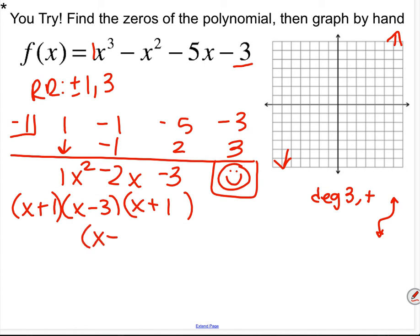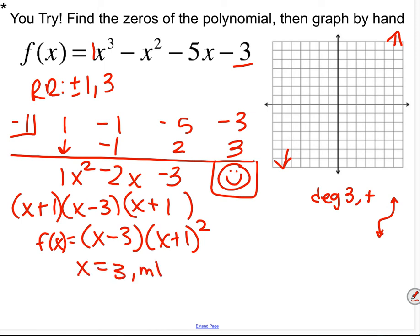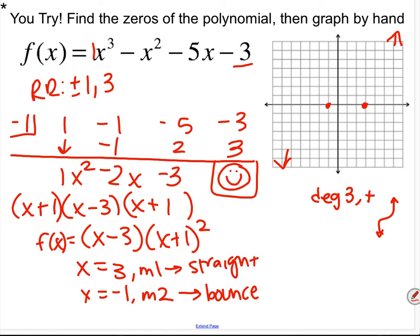Notice we have two x plus 1 factors, so the polynomial can be written as x minus 3 times x plus 1 squared. This means x equals 3 has multiplicity 1 (straight through) and x equals negative 1 has multiplicity 2 (bounce). Plotting negative 1 and 3 on the graph: it comes up, bounces at negative 1, then goes straight through at 3 and continues up.